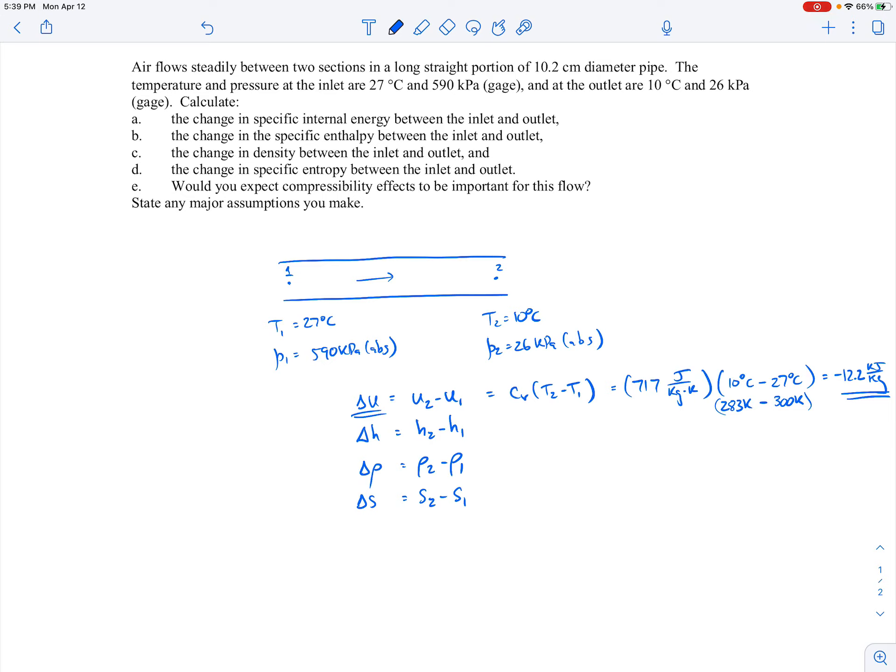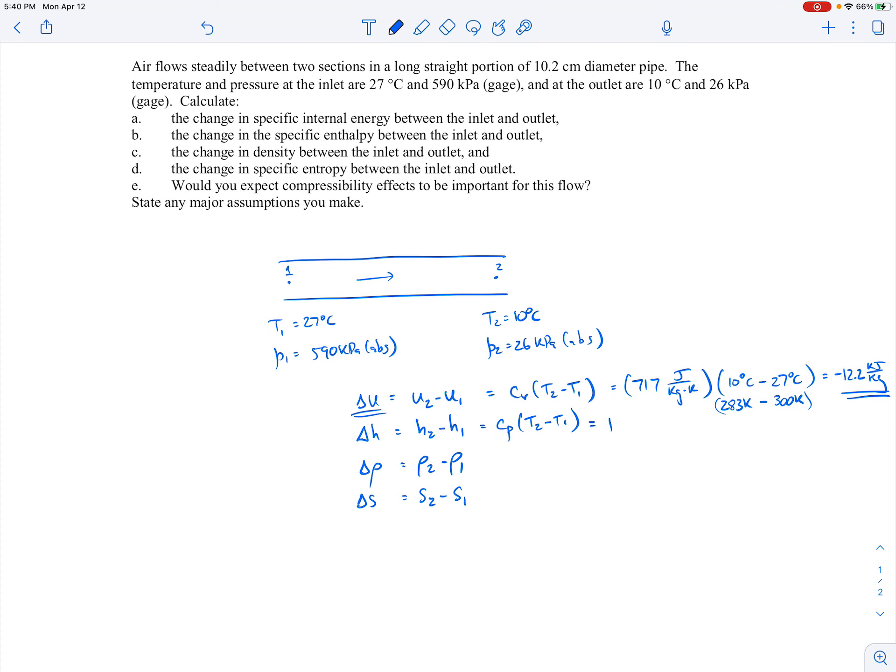Now for the change in specific enthalpy, again for an ideal gas with constant specific heats, it would be Cp times T2 minus T1. And if you look up the specific heat at constant pressure for air at this temperature, that's 1,004 joules per kilogram Kelvin. We're dealing with the same delta in temperature, this delta is minus 17 Kelvin. And then when you plug in those numbers, this comes out to be minus 17.1 kilojoules per Kelvin. So that's our change in specific enthalpy.